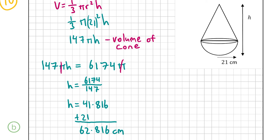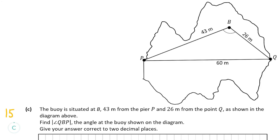Part c is worth 15 marks. The buoy is at point B, 43 meters from pier P and 26 meters from point Q, and we need to find angle QBP, correct to two decimal places. In triangle PBQ we know all three sides, so we use the cosine rule. This is not a right-angled triangle, so we cannot use sine, cos, or tan ratios — that's a common mistake. The cosine rule is on page 16 of the formula and tables book.